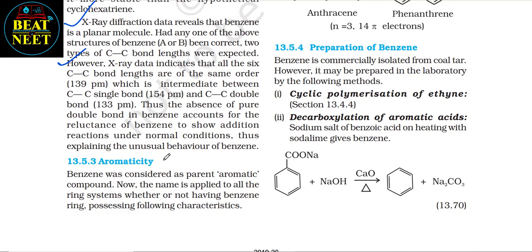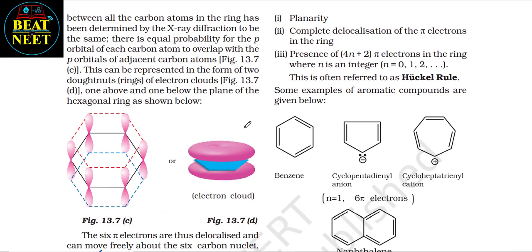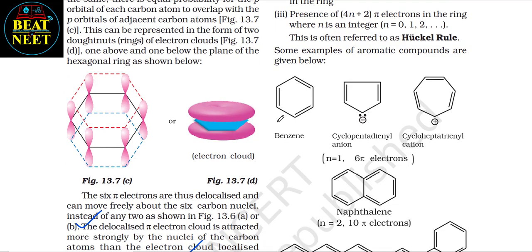The absence of pure double bonds in benzene accounts for its reluctance to undergo addition reactions under normal conditions, explaining the unusual behavior of benzene. 13.5.3 Aromaticity: benzene is considered the parent aromatic compound. The name is now applied to all ring systems possessing: (1) planarity, (2) complete delocalization of pi electrons in the ring, and (3) presence of (4n + 2) pi electrons in the ring where n is an integer (0, 1, 2, ...). This is referred to as Hückel's rule. Examples include benzene, cyclopentadienyl anion, cycloheptatrienyl cation, naphthalene, anthracene, and phenanthrene.